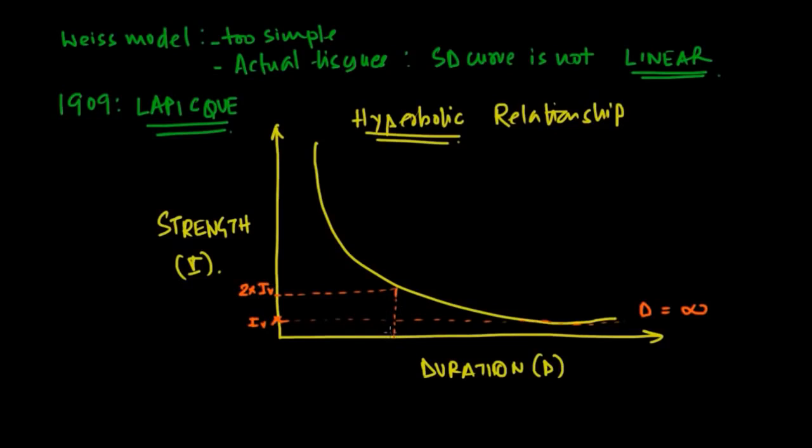What he also found was when he doubled this charge, he could shorten the duration at twice the current required to stimulate the nerve. At this duration, which he called chronaxie.